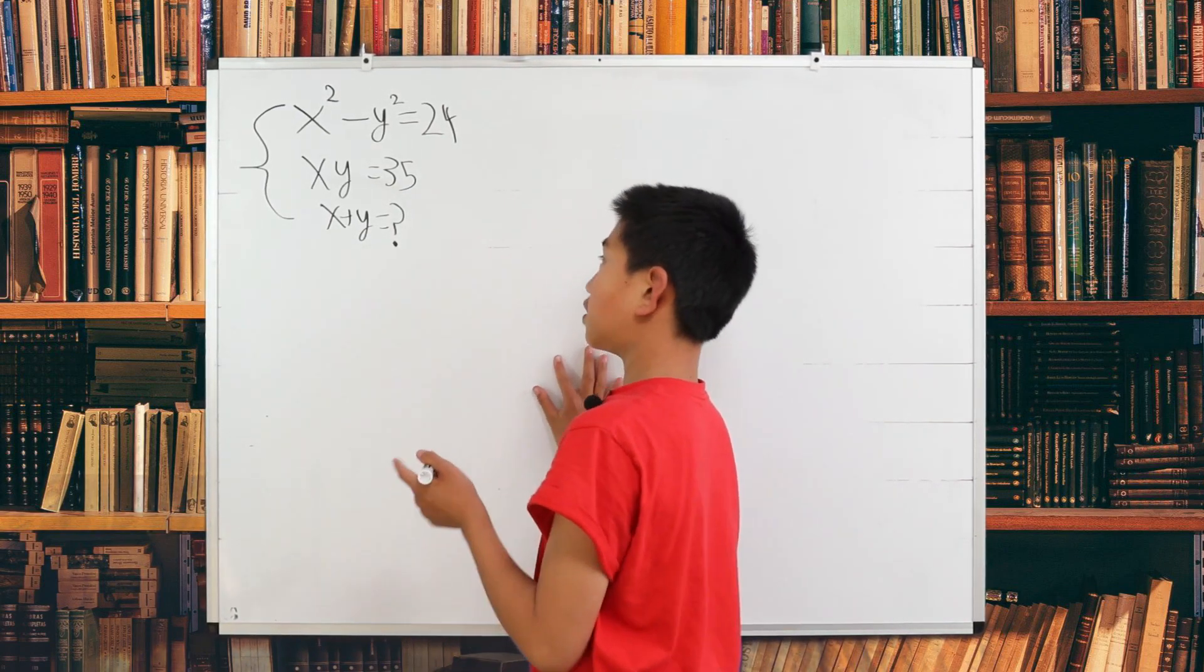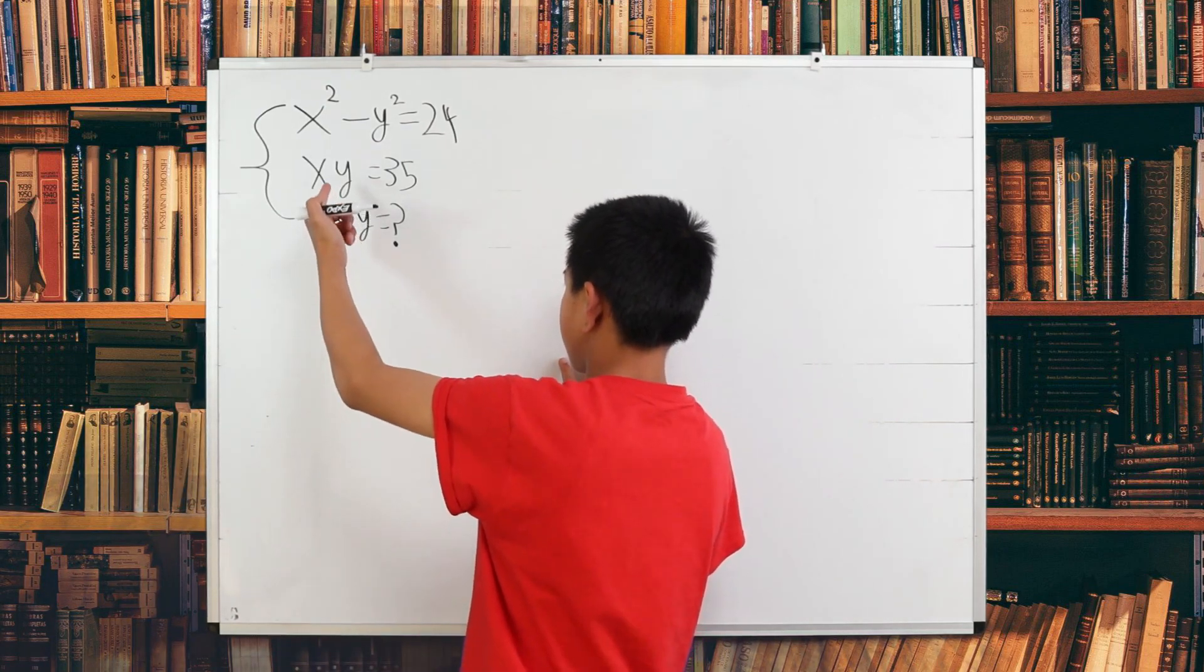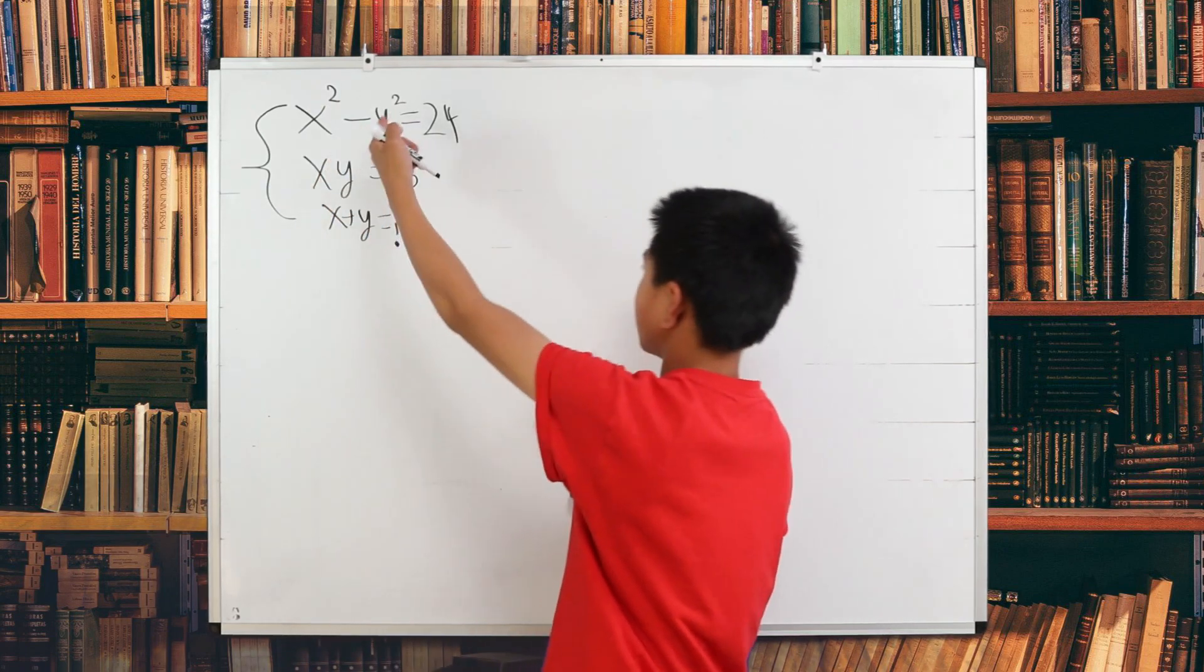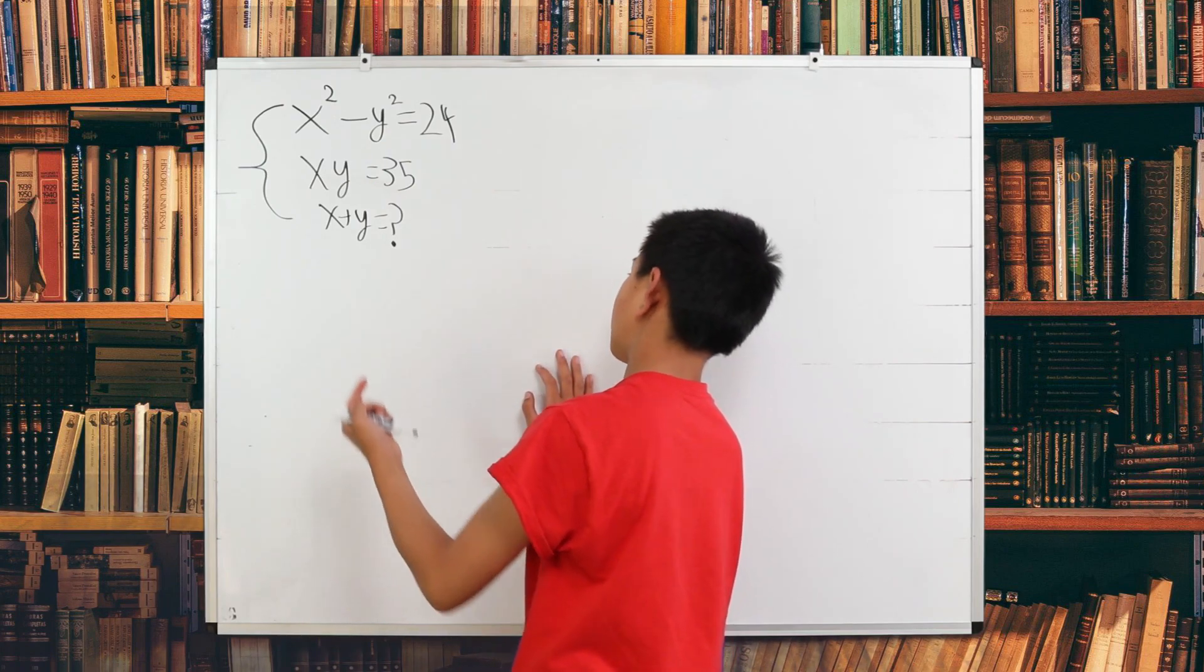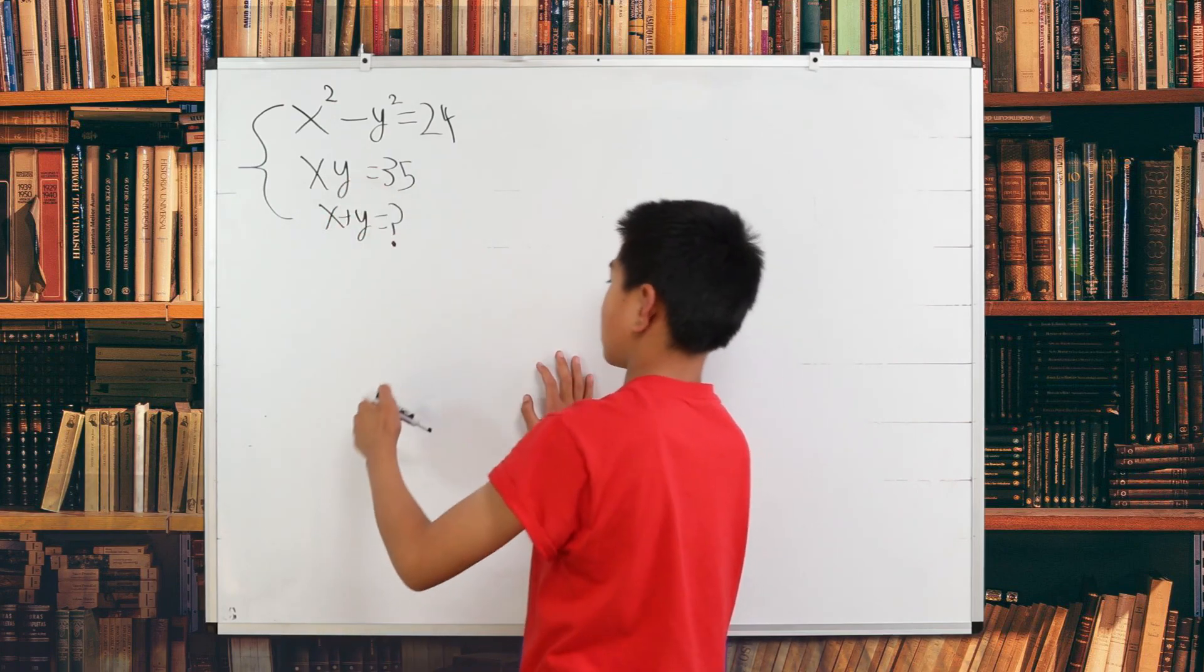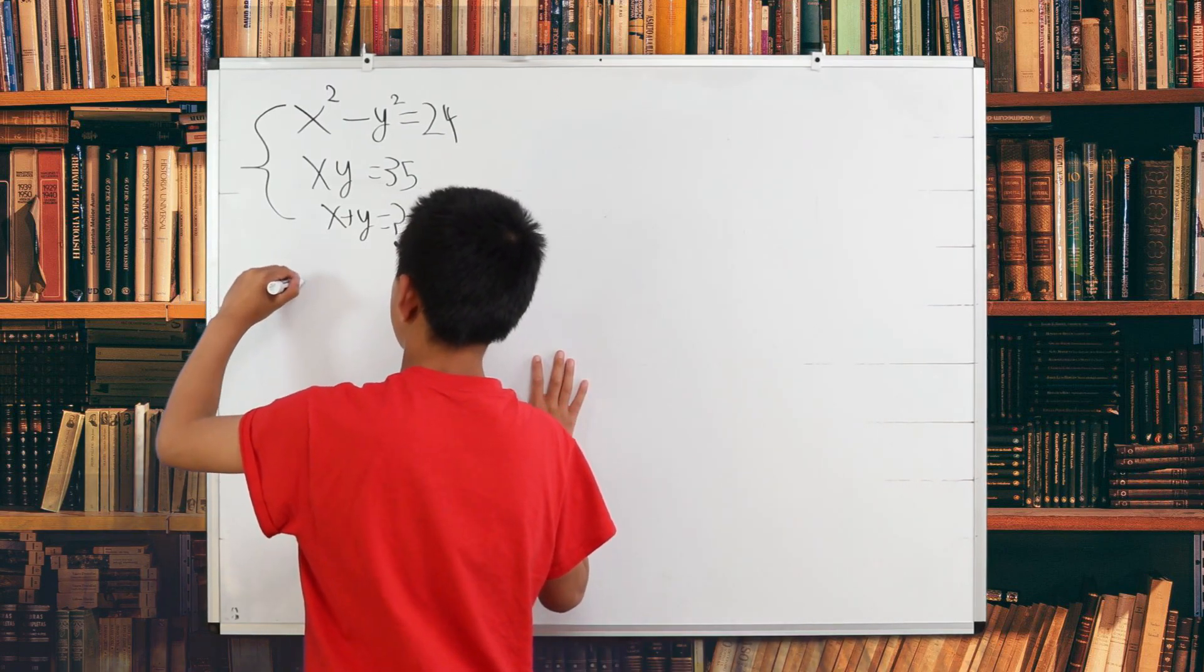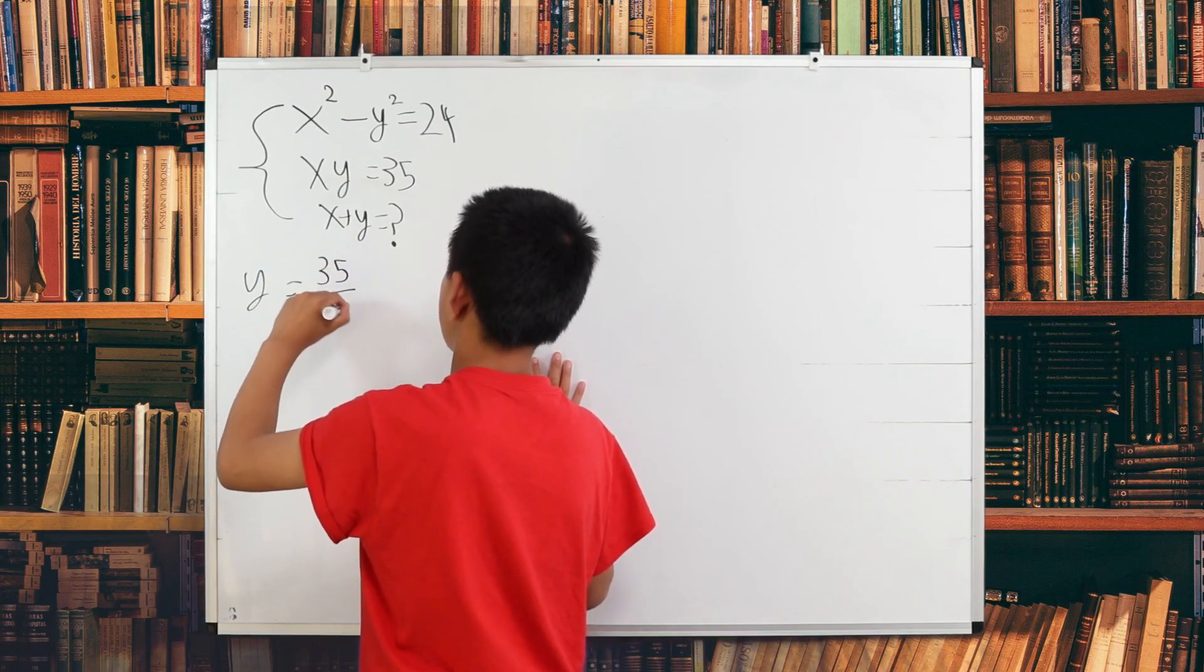So what we have to do here is, since we are given that x times y is 35, we have to make this original equation of only one variable. So we can do that by dividing one variable in this equation. Let's do y because it's easier. So y is equal to 35 over x.